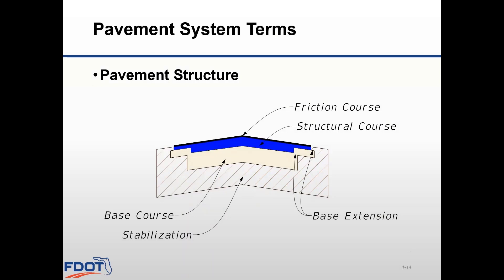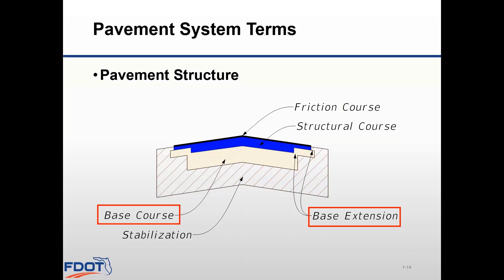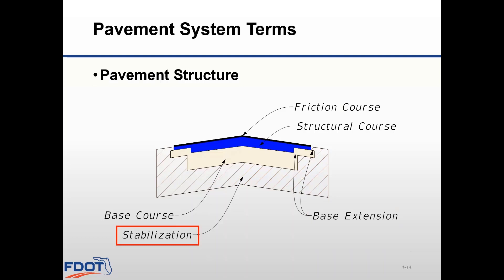Now let's get into pavement system terminology and look at the general structure of a flexible pavement system. The top layer of asphalt is the friction course, which uses selected aggregates and produces a skid-resistant surface. The next layer down is the structural course, the major structural component designed to distribute traffic down to the base course. Underneath is the base course, whose major function is to provide structural support. The base extension provides additional support for the transition area between the main travel lanes and the paved shoulder. The bottom layer is stabilization — the soil underneath the base material, compacted to specific density requirements.